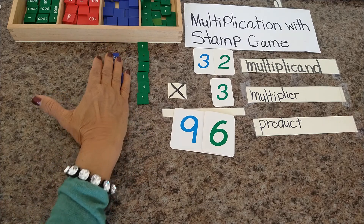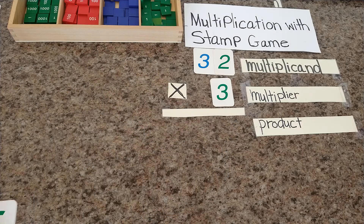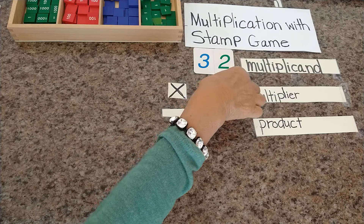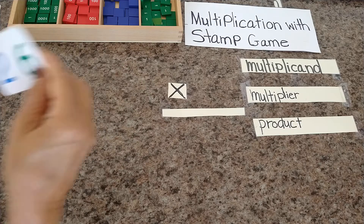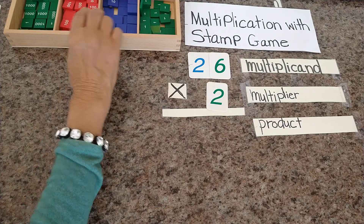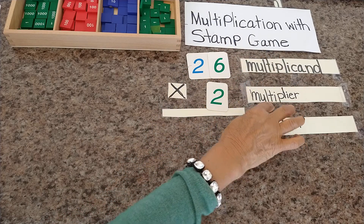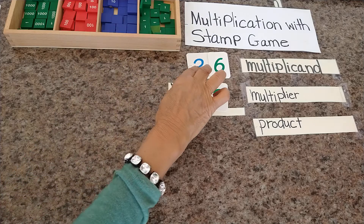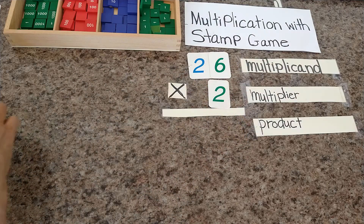So let's do another one. I'm going to put these cards away and put new ones here. 26 times 2. 26 is the multiplicand, 2 is the multiplier. We have to bring 26 — how many times? 2 times. All right, let's get started.